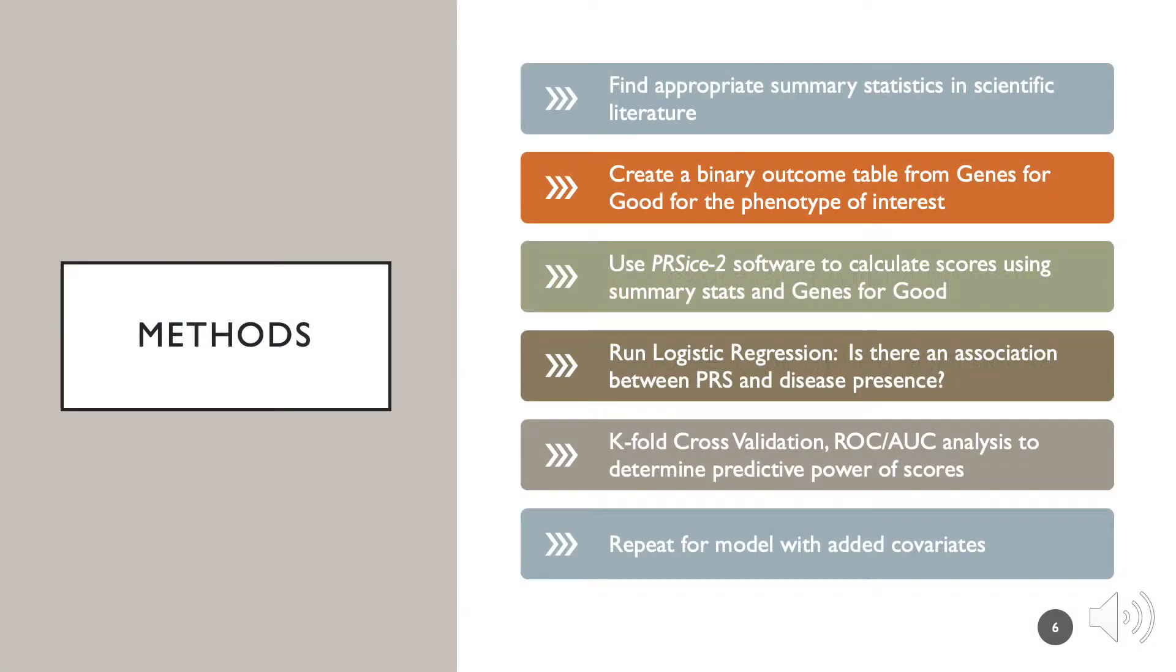First, we located summary statistics from a 2018 GWAS in recent scientific literature. We then filtered the Genes for Good survey data for questions surrounding hypertension and heart disease. Using both command line and R-based computing, we created a binary phenotype file for all 20,000 genotyped individuals in Genes for Good.